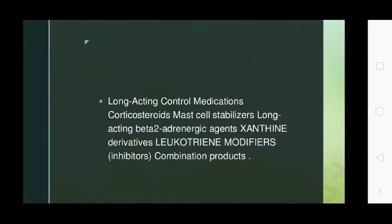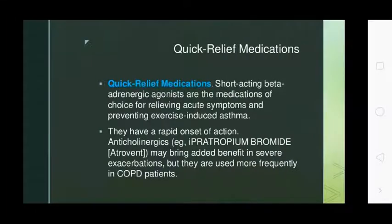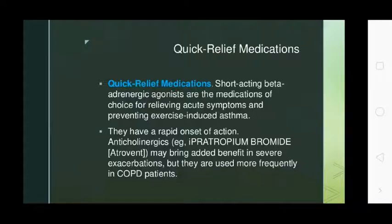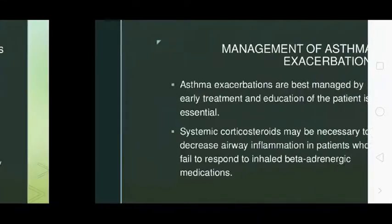Long-acting control medications also include: corticosteroids, long-acting beta-2 adrenergic agents, xanthine derivatives, leukotriene modifiers, inhibitors, and combination products. Quick relief medications include short-acting beta-2 adrenergic agonists, which are the medication of choice for relieving acute symptoms and preventing exercise-induced asthma. They have a rapid onset of action. Ipratropium bromide (Atrovent) may bring added benefit in severe exacerbations but is used more frequently for COPD patients.